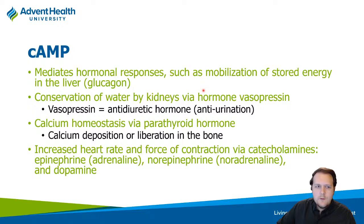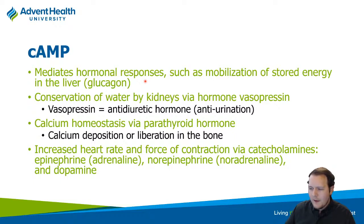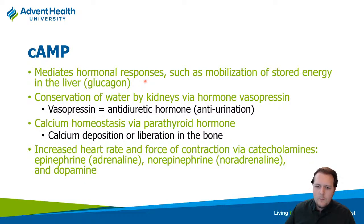Cyclic AMP helps mobilize energy. In the liver, which stores glycogen as temporary glucose storage, glucagon can stimulate the breakdown of glycogen to produce new glucose — gluconeogenesis — and that's partly mediated through cyclic AMP as its secondary messenger. We also see vasopressin, also called anti-diuretic hormone, affecting the kidneys. Calcium homeostasis in the parathyroid, and cardiac function including force of contraction and heart rate, are also affected by cyclic AMP.